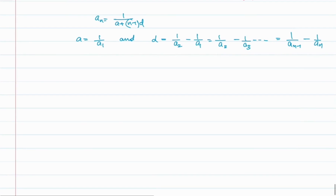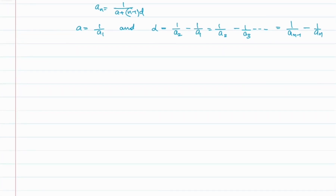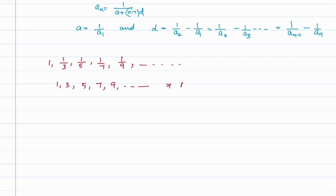Now let's take a simple example by considering the harmonic progression: 1, 1/3, 1/5, 1/7, 1/9, and so on. To find the nth term, we take the sequence of reciprocals: 1, 3, 5, 7, 9, and so on. This is an arithmetic progression with first term a = 1 and common difference d = 3 − 1 = 2, and also 5 − 3 = 2.